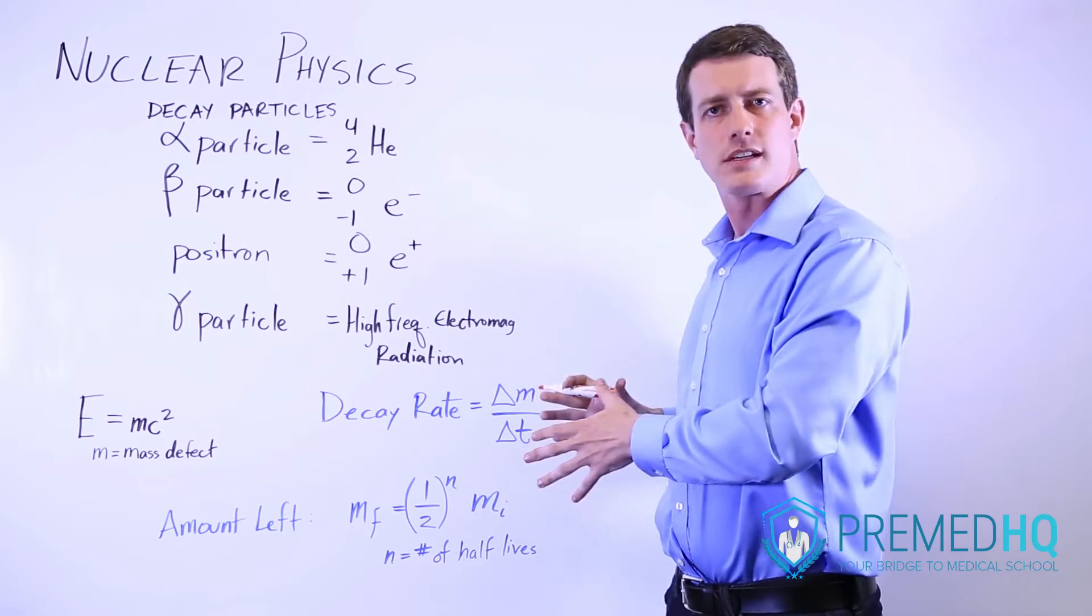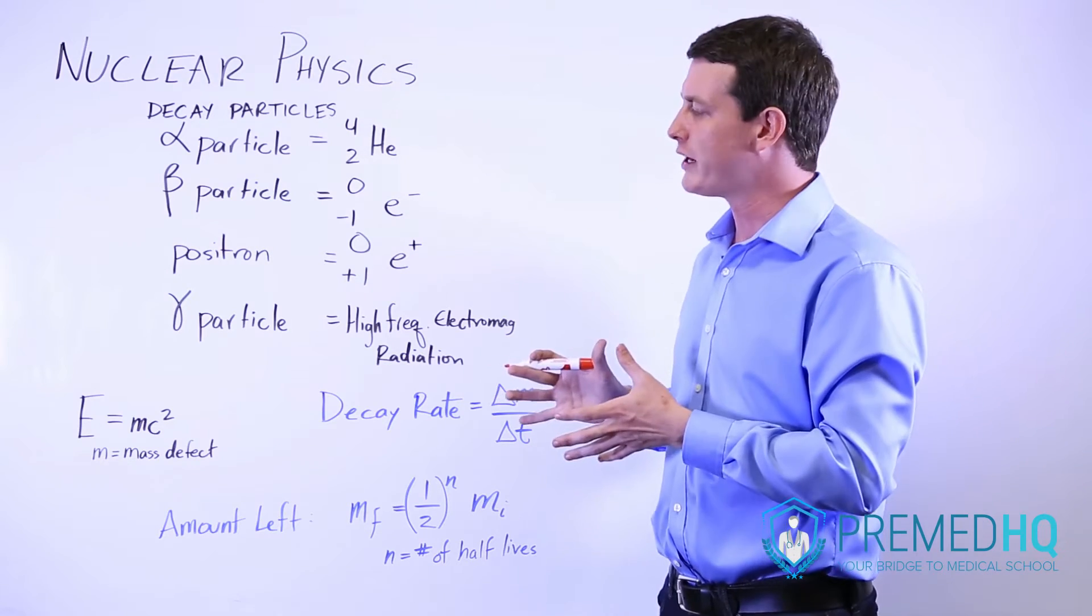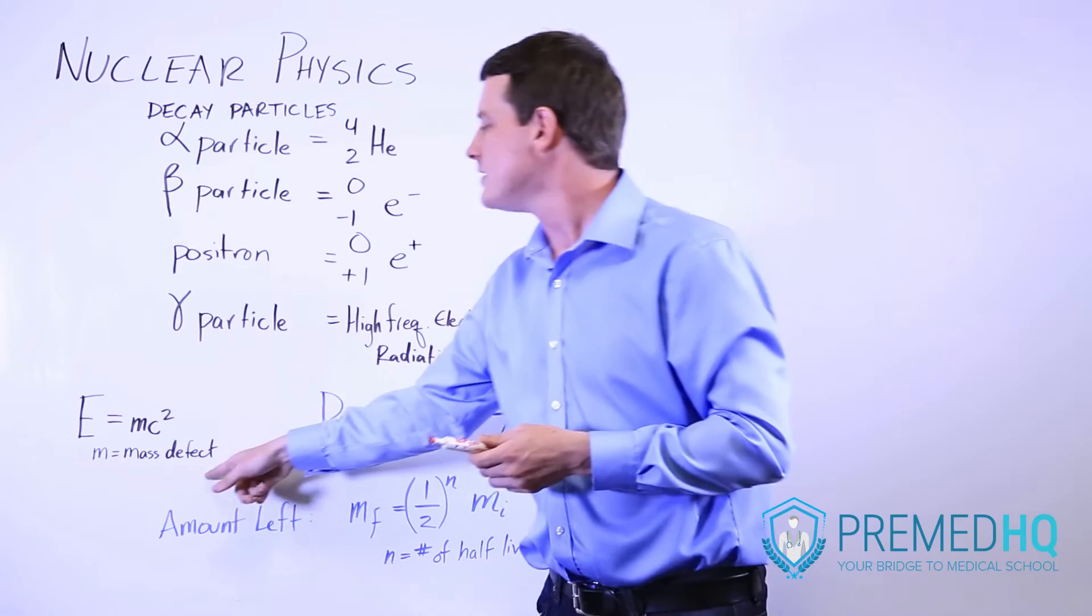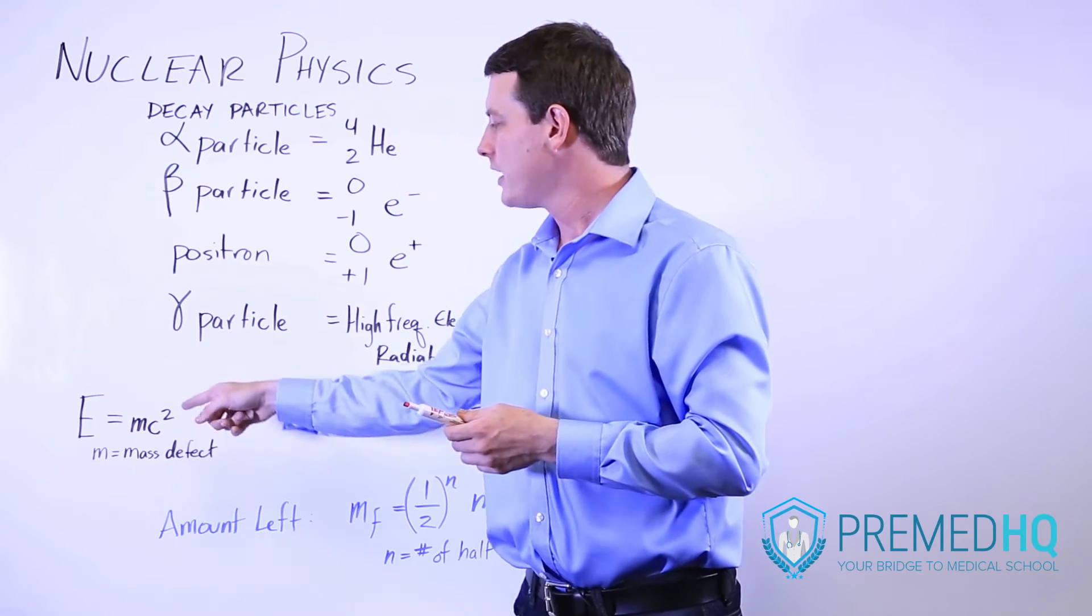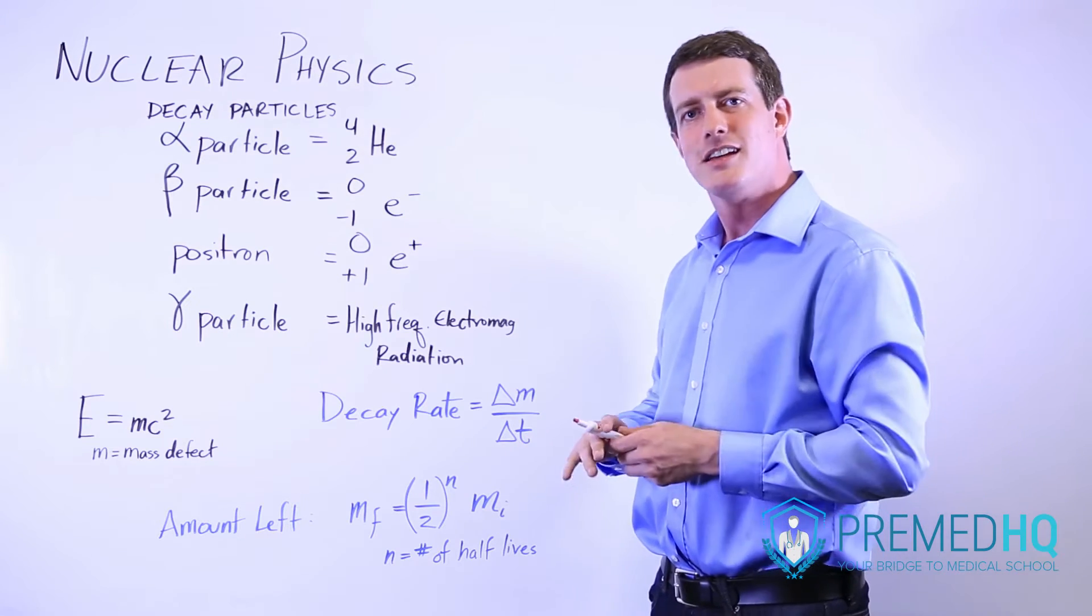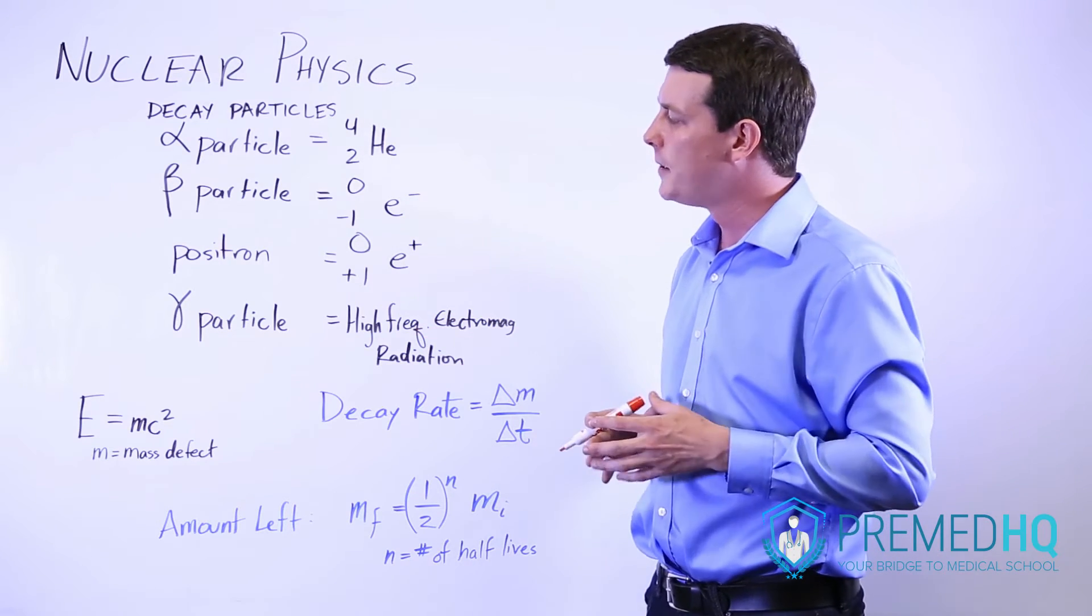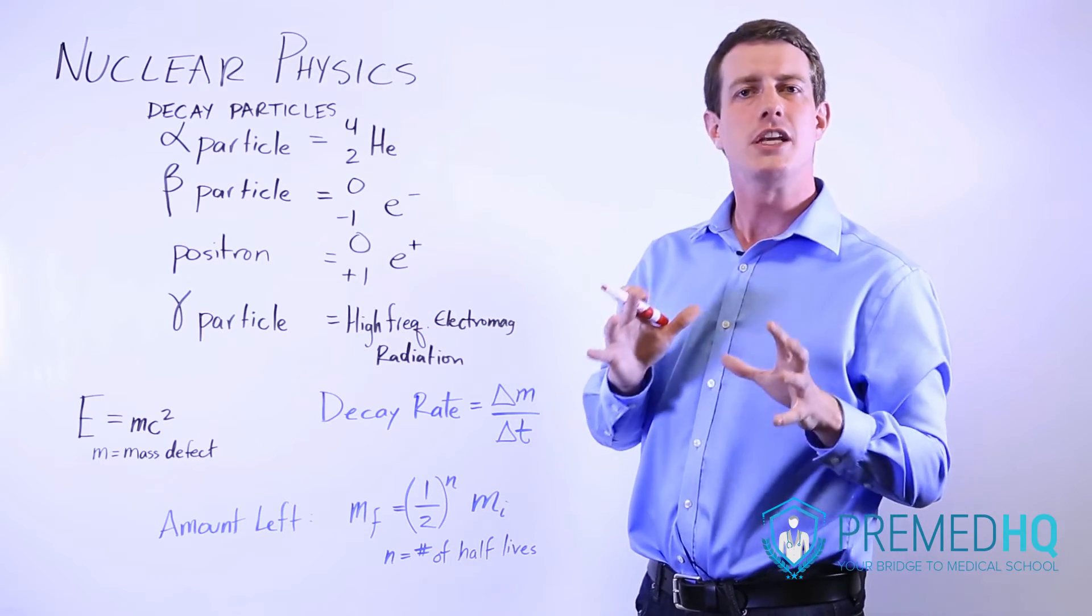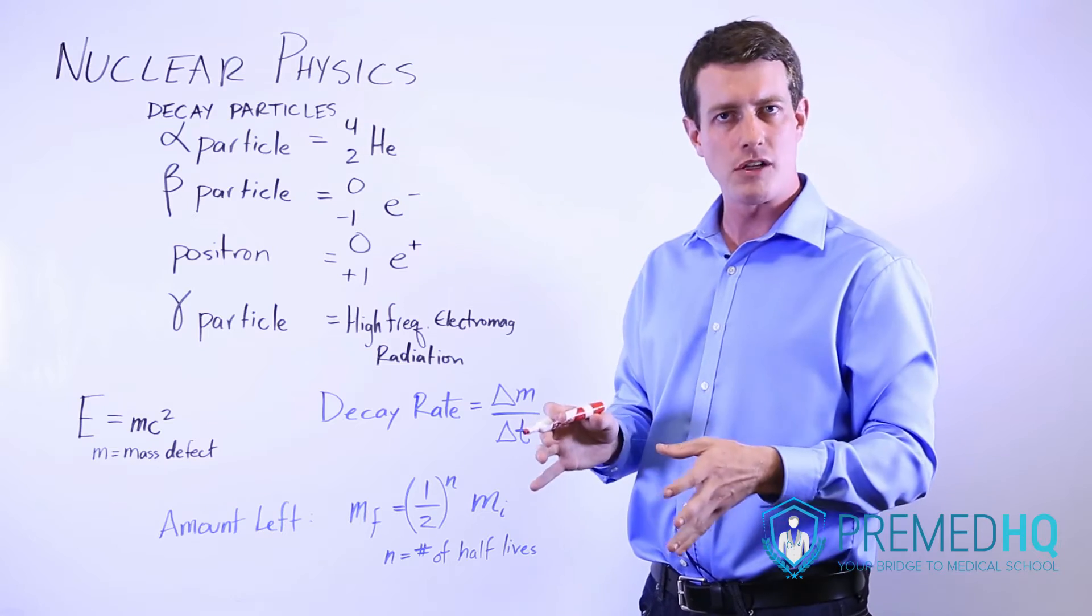Some mass is lost in the process of this nuclear reaction. Whatever that mass defect is, when you multiply it by the speed of light squared, which is usually three times ten to the eighth meters per second squared, that tells you how much energy can be released by destroying a small amount of matter.